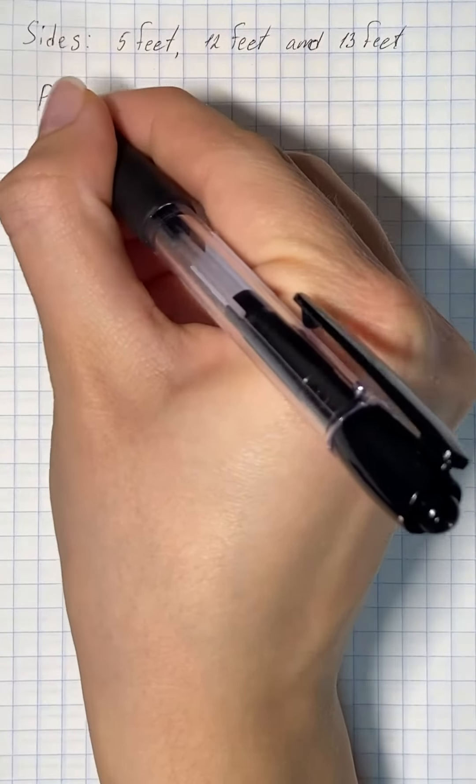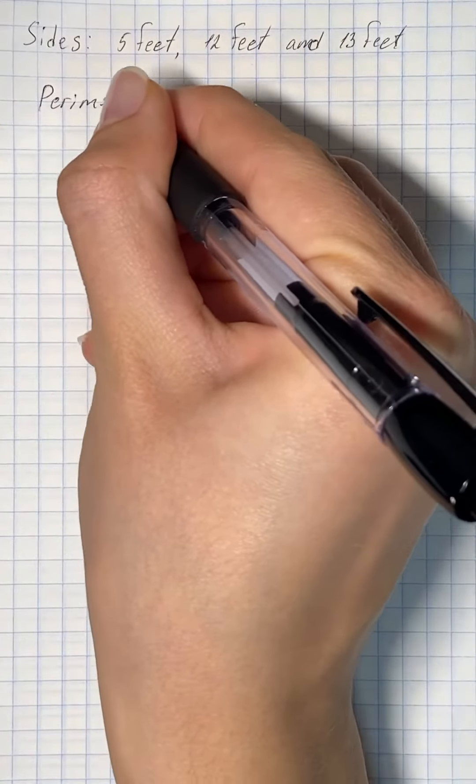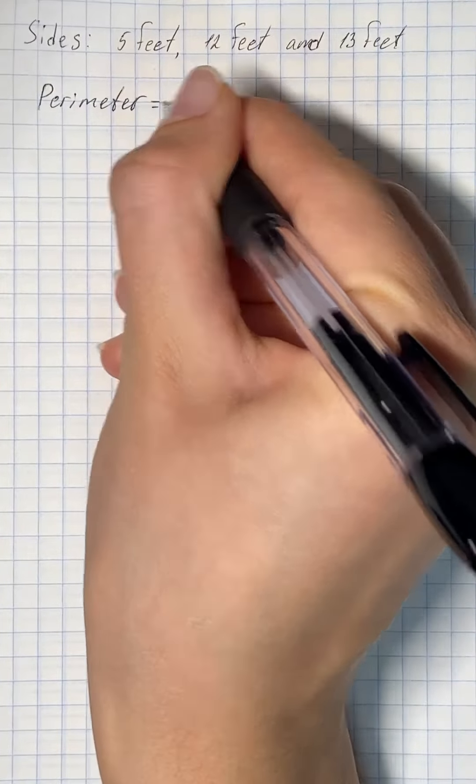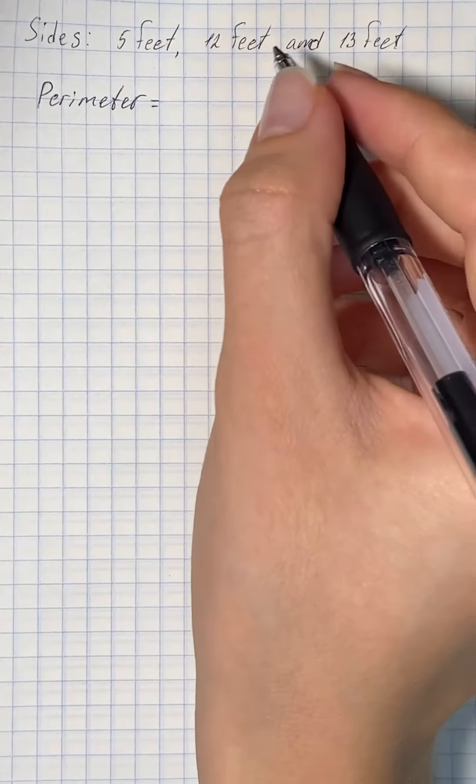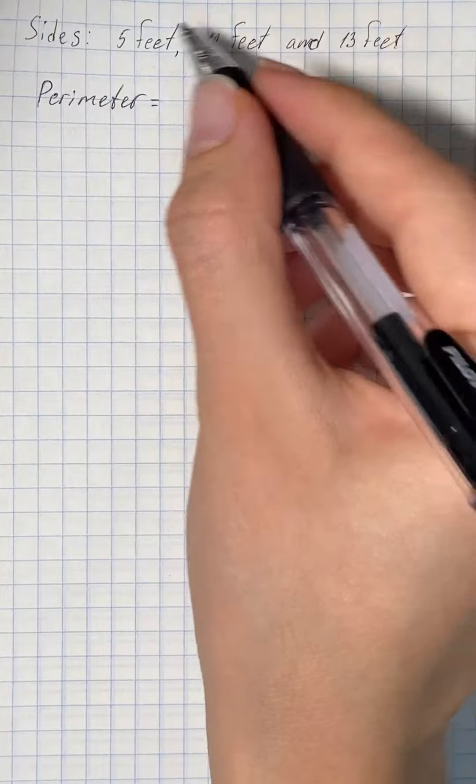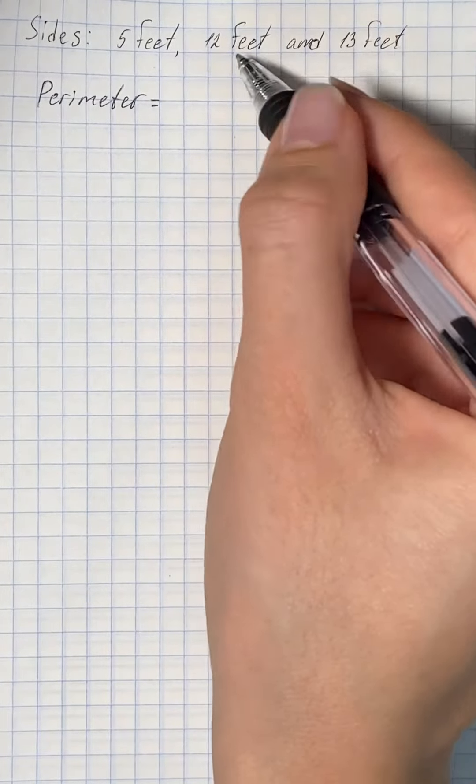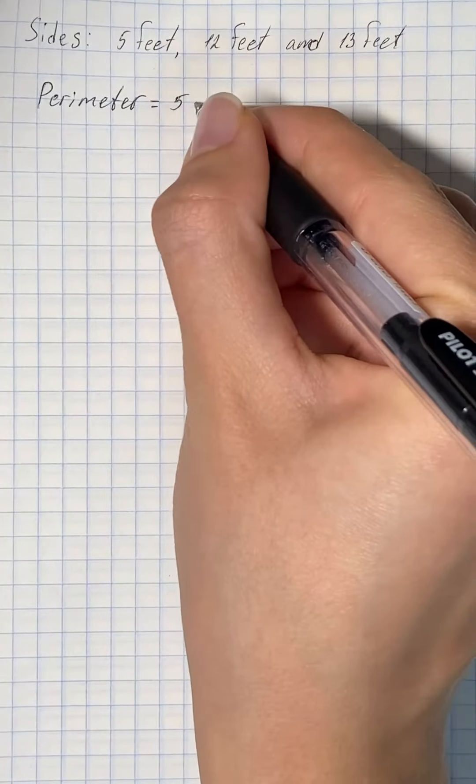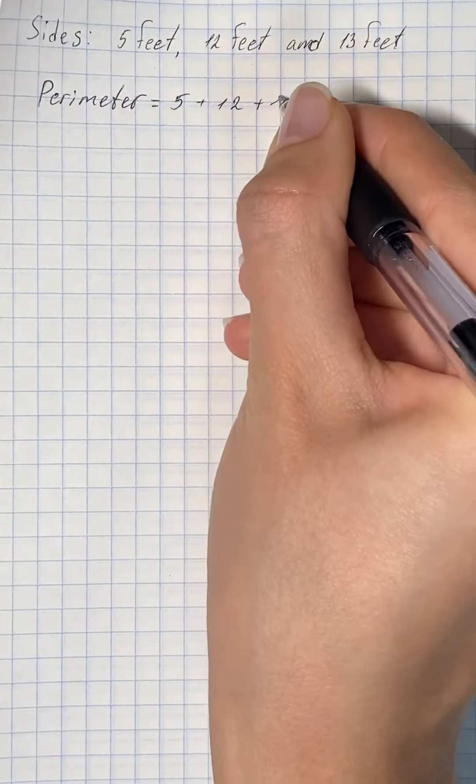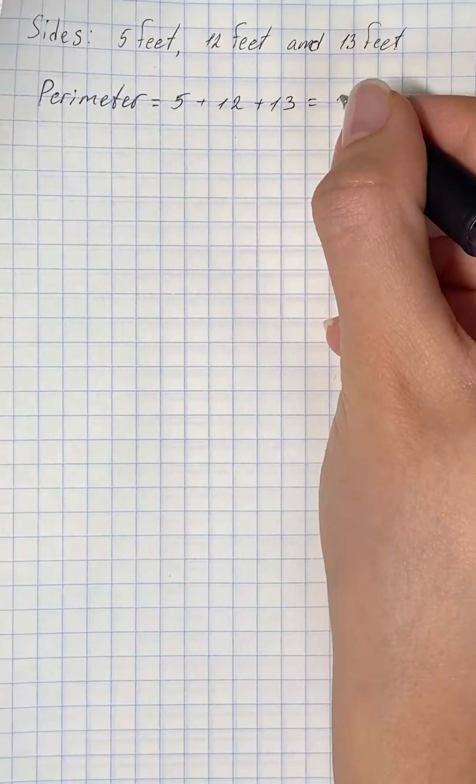So at first we're gonna find the perimeter. The perimeter of triangle is equal to sum of lengths of all sides. So that's gonna be 5 plus 12 plus 13, and we get 30 feet.